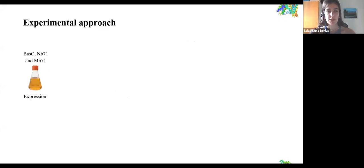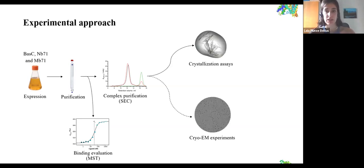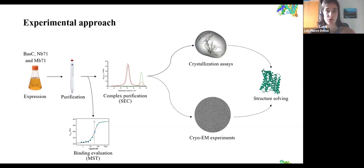The experimental approach we followed was first to express our proteins, then perform purification, and with purified proteins conduct binding evaluation assays. In parallel, we performed complex purification with size exclusion chromatography, both with BASC–nanobody and BASC–megabody complexes. We also did crystallization assays with BASC and nanobody 71, and in the future we want to do cryo-EM experiments with BASC and the megabody. These two techniques should converge in solving a new conformational structure of BASC.